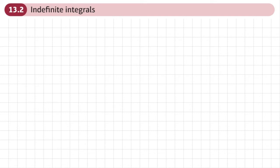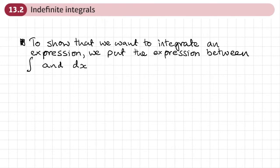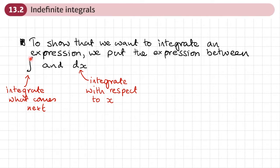This is the second section of chapter 13 on integration, and this section is about indefinite integrals. In questions we've done so far, when we've wanted to integrate something, we've just said integrate this. Now we've got notation we can use. To show that we want to integrate an expression, we put the expression between this symbol here — which is like a stretched out S — and the letters DX. This elongated stretched out S basically means integrate what comes next, and the DX at the end means integrate with respect to X. So X is the letter where we add one to the power and divide by that new power.